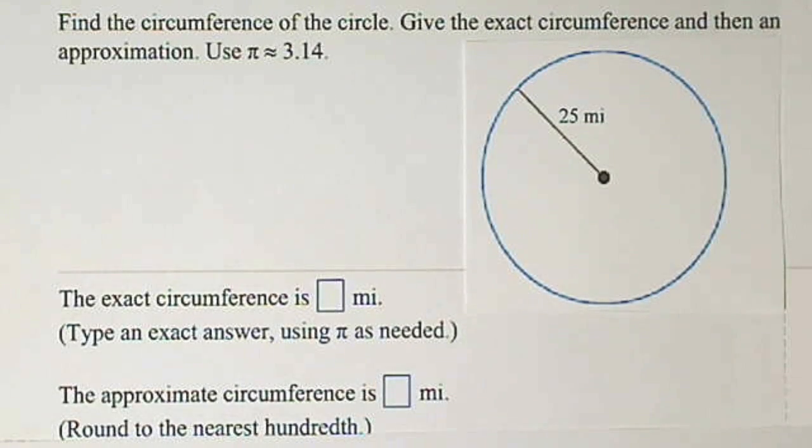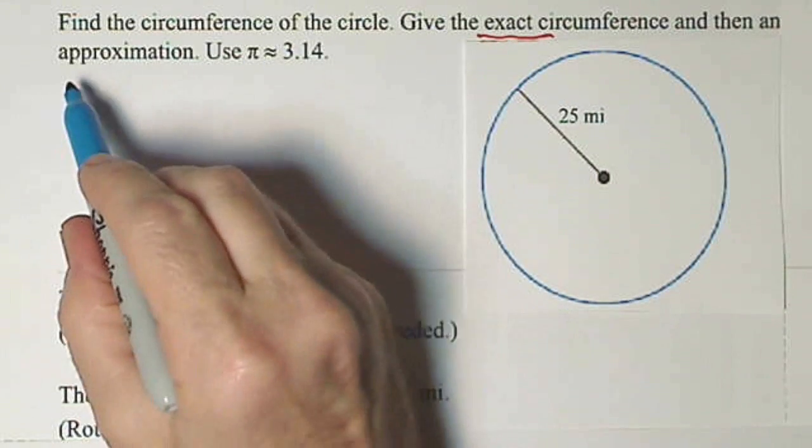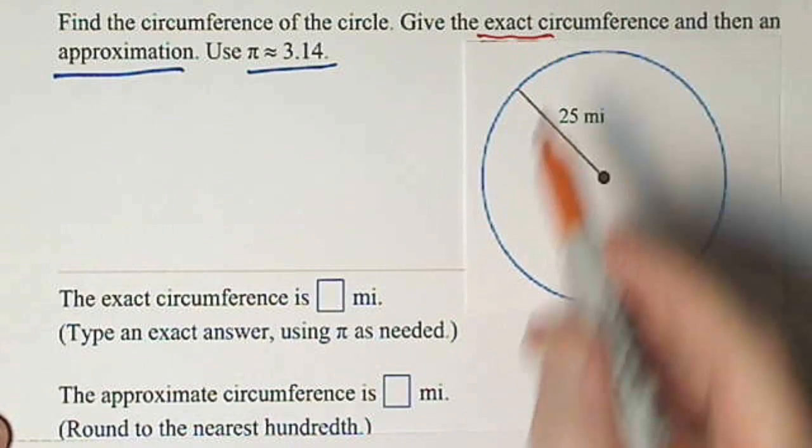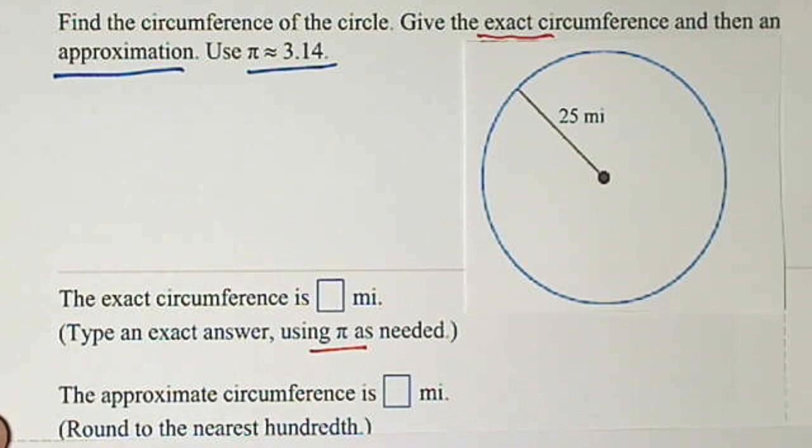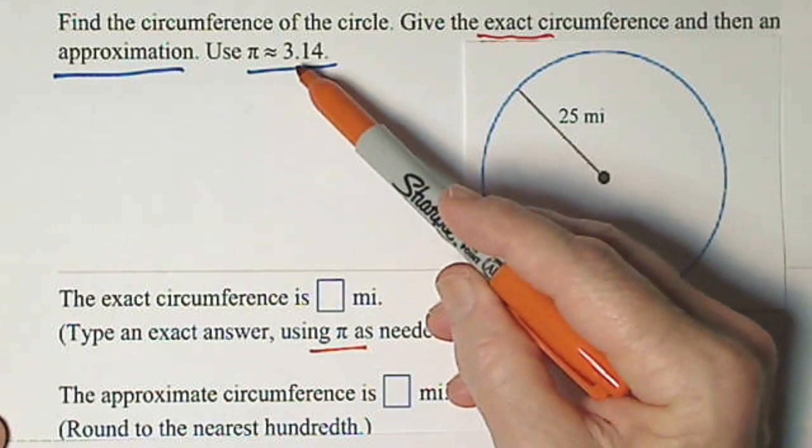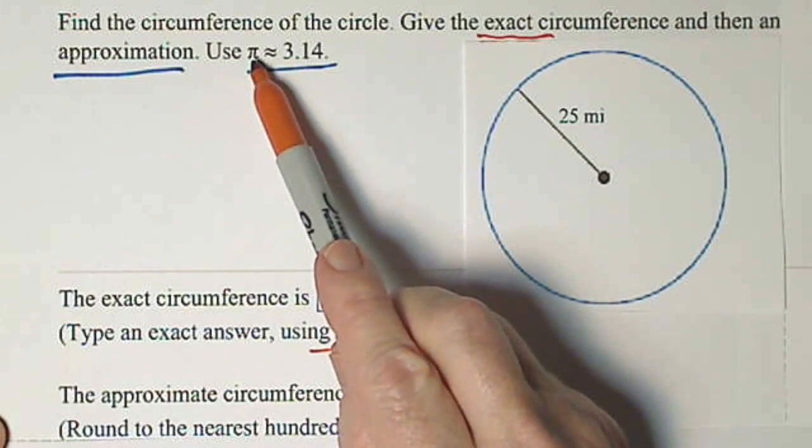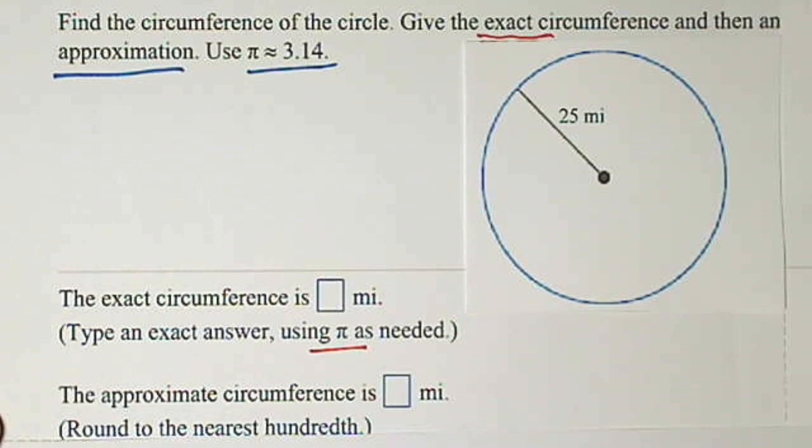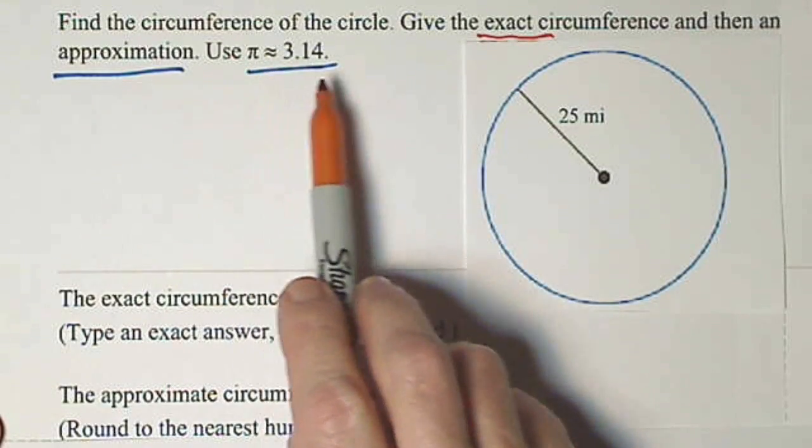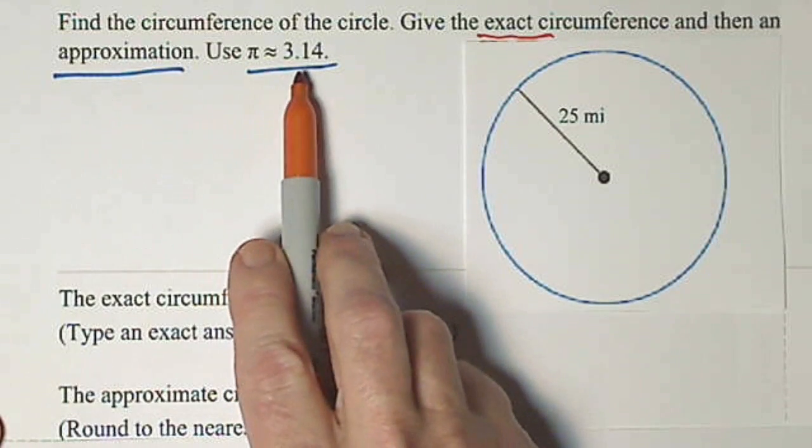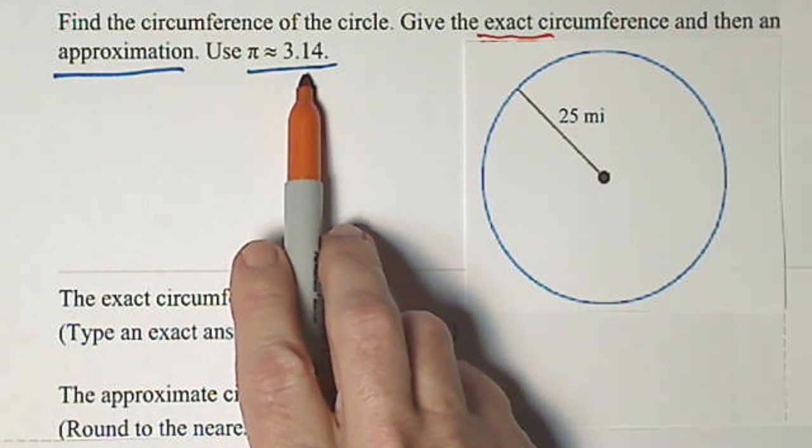On this one they want us to find, notice the exact circumference. And then an approximation using pi as 3.14. So when they want the exact circumference, they want us to use pi. Whenever we use 3.14 or 22/7, those are both approximations of this relationship. Pi is the relationship of diameter to circumference. But that's not really critical here. What does matter is if they say exact, you're to use the symbol pi. If they say approximation, you're to use either 3.14 or 22/7.